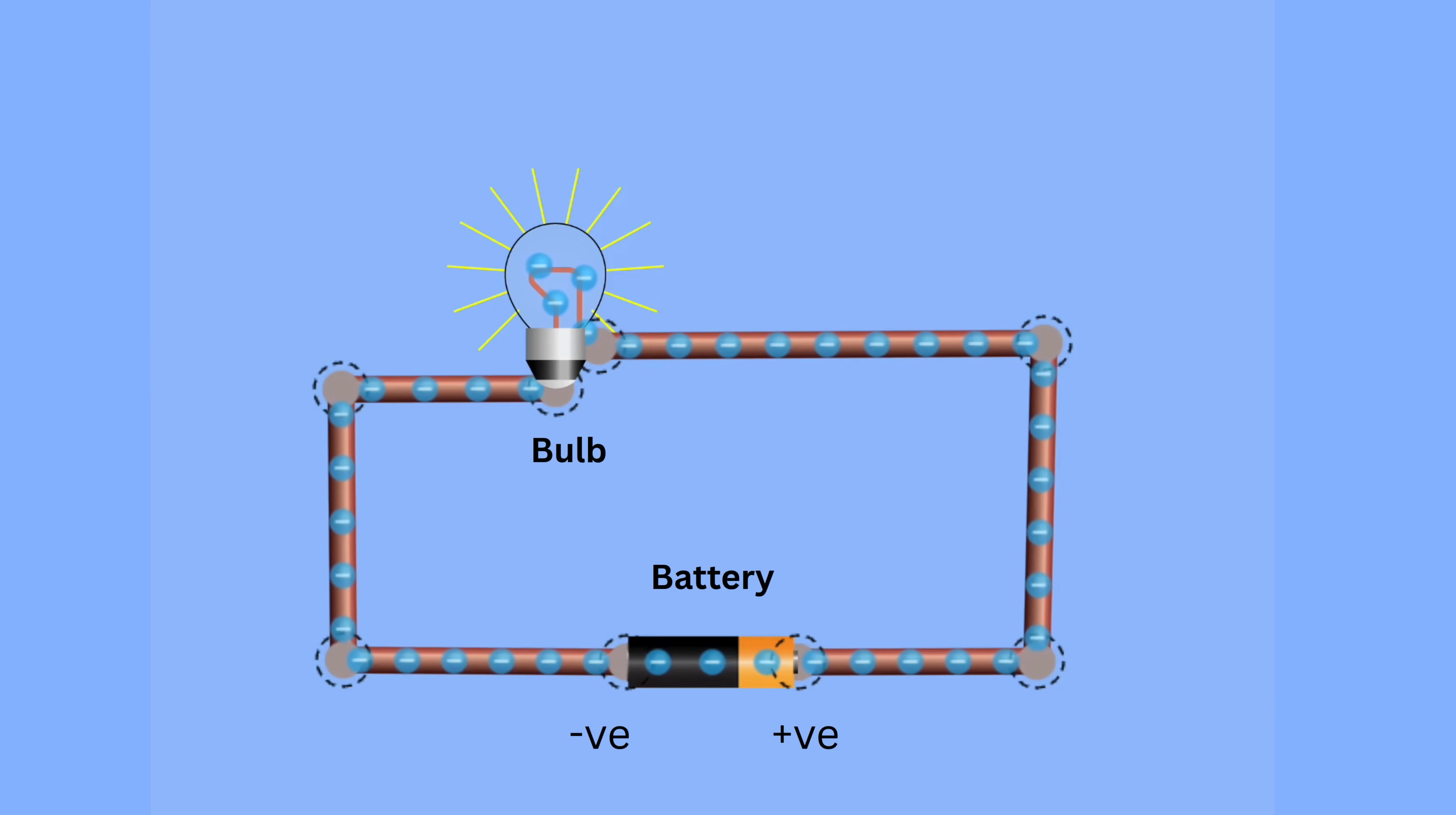When the circuit is complete, these electrons start moving through the wire from the negative terminal, pass through the bulb, making it glow, and return to the positive terminal. This continuous movement of electrons through the wire is called electric current.